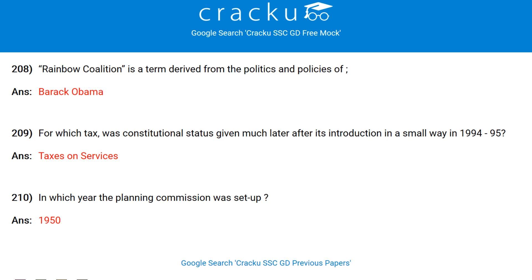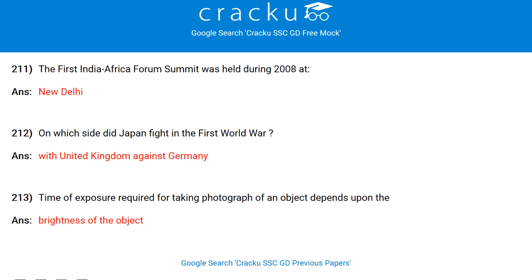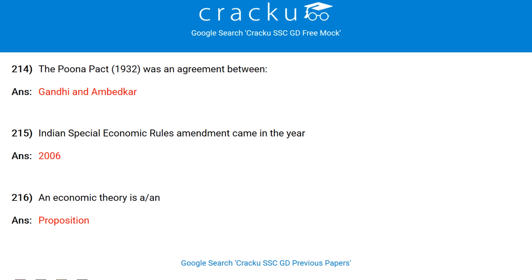Who can impose reasonable restrictions over fundamental rights? Parliament. The layer of the atmosphere in which radio waves are reflected back is called the ionosphere. Rainbow coalition is a term derived from the politics and policies of Barack Obama. For which tax was constitutional status given much later after its introduction in a small way in 1994-1995? Taxes on services. In which year was the Planning Commission set up? 1950.